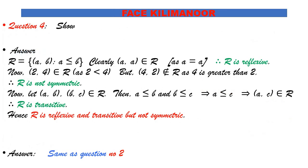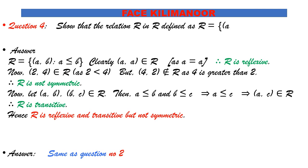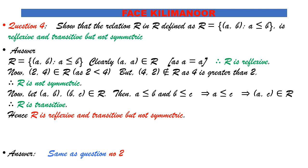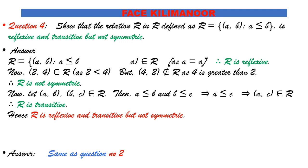Question 4: Show that the relation R in the real numbers defined as R = {(a,b) : a ≤ b} is reflexive and transitive but not symmetric. The relation is R = {(a,b) : a ≤ b}.